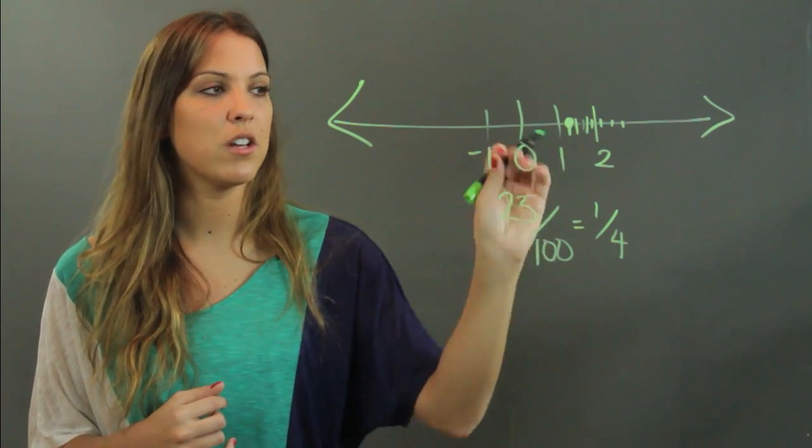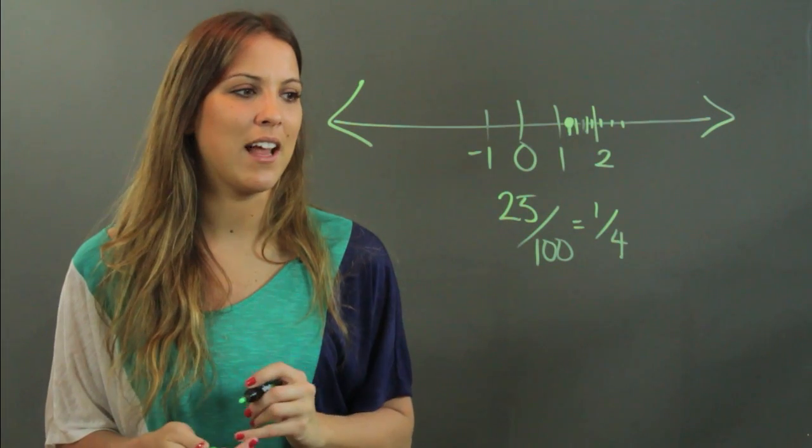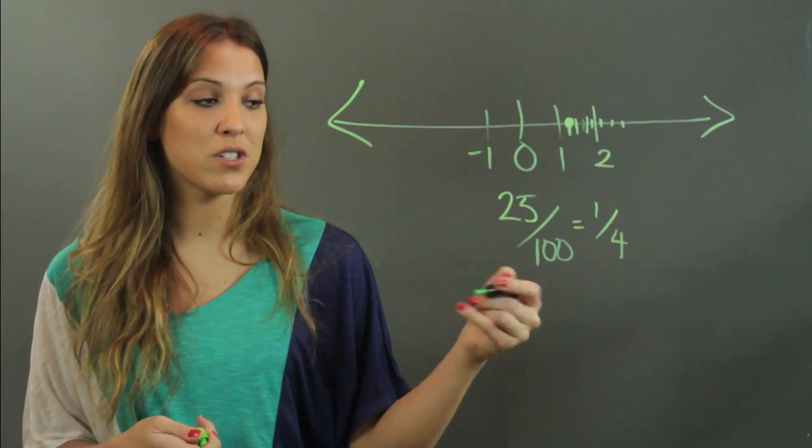But if it's a number like three over a hundred, you would literally have to draw 100 notches and then get there. Just to know where the hundredths place is.